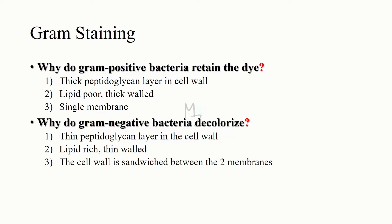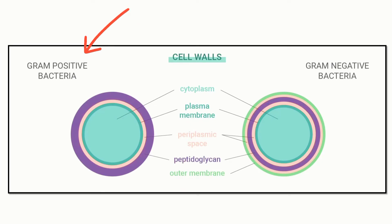Why do gram positive bacteria retain the dye and why do gram negative bacteria decolorize? Gram positive bacteria have a thick peptidoglycan layer in their cell wall — they are lipid-poor and thick-walled with a single membrane. Gram negative bacteria have a thin peptidoglycan layer in their cell wall — they are lipid-rich and thin-walled, with their cell wall sandwiched between two membranes.